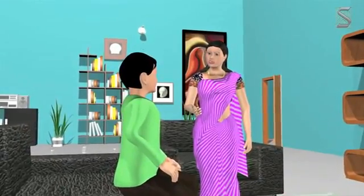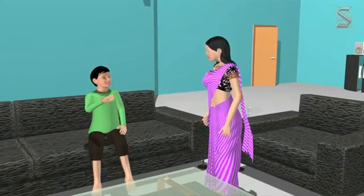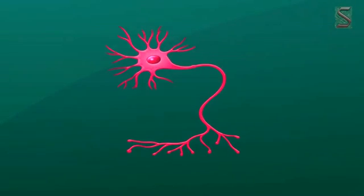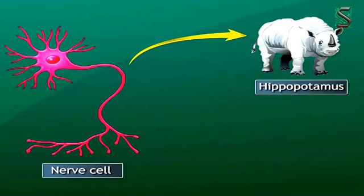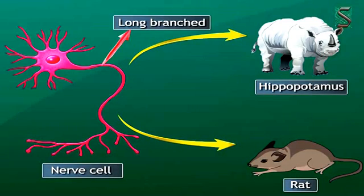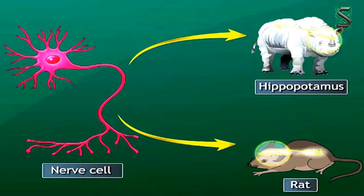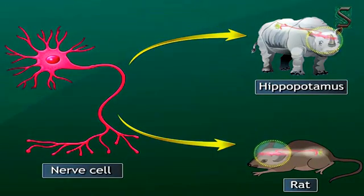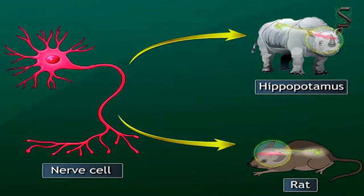Is the size of cell related to the function of the cell? Yes, the size and shape of a cell both depend on the function of the cell. But, I'll give you an example. The nerve cells in a hippopotamus are very similar to those in a rat's body. In both cases, the nerve cells are long and branched and are involved in the transmission of messages.